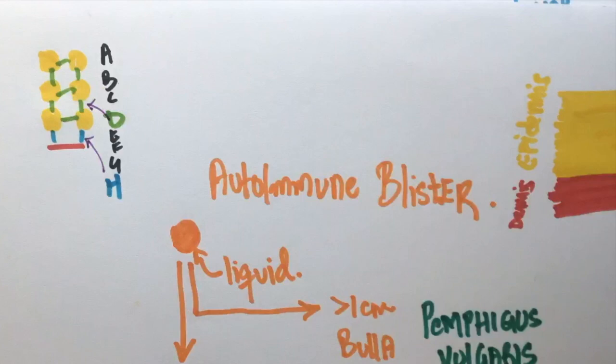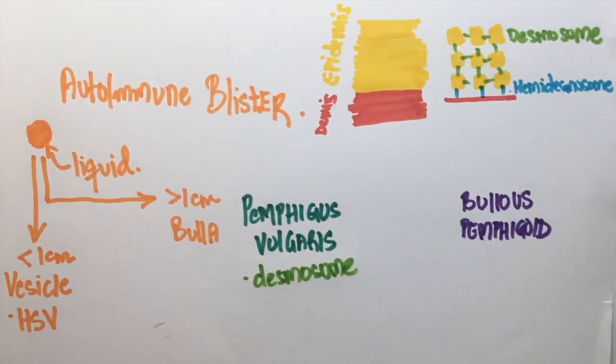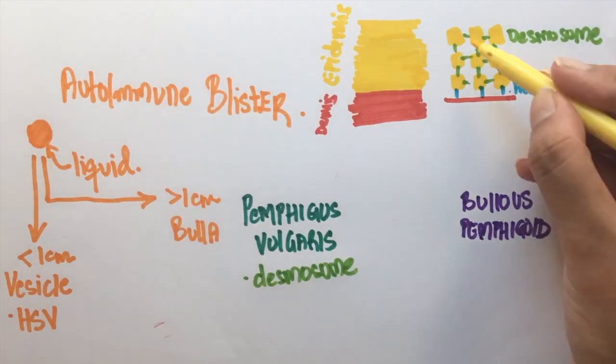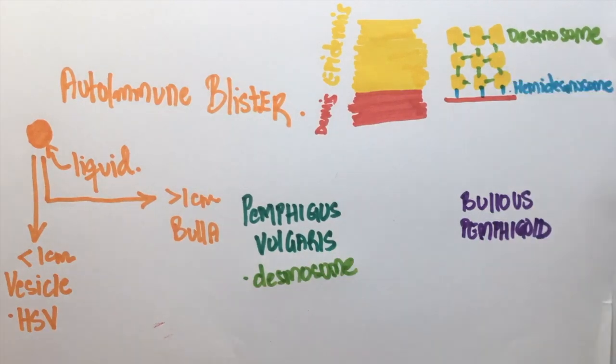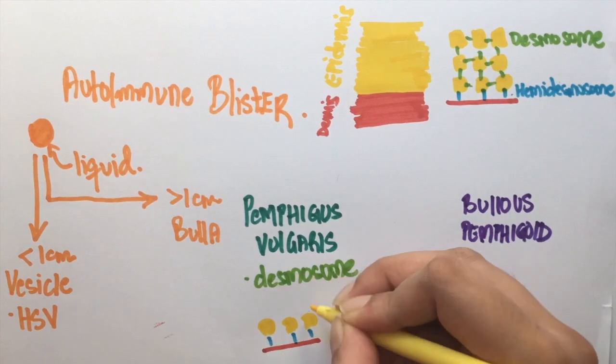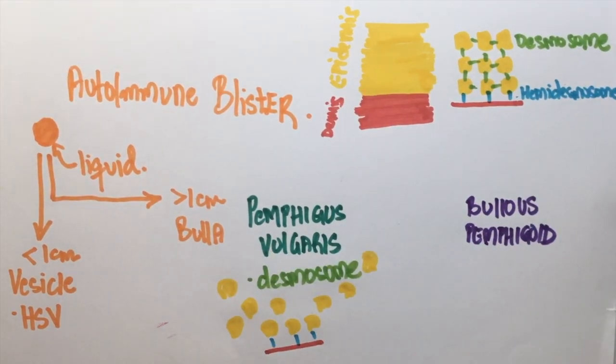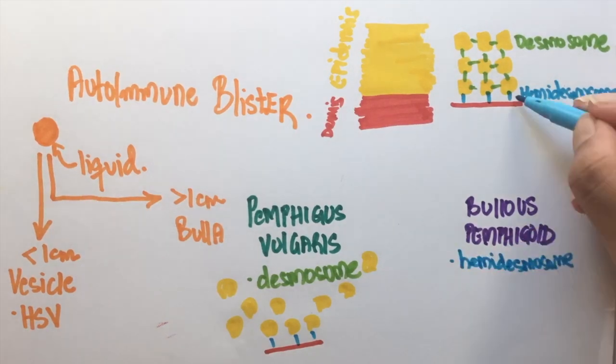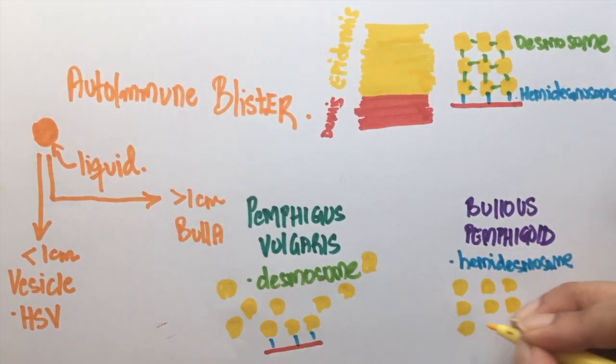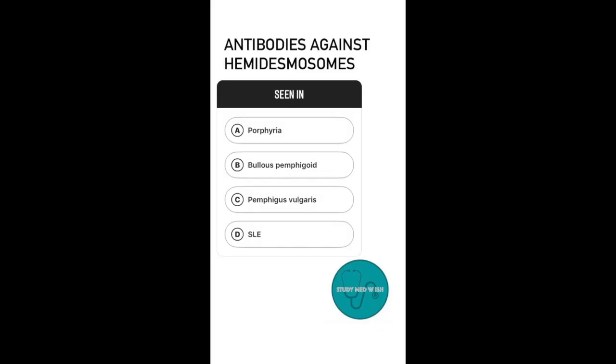In pemphigus vulgaris, there are antibodies present against the desmosomes, so the connection between two epidermal cells will be lost — epidermal cells get separated. In bullous pemphigoid, there are antibodies against the hemidesmosomes, so there will be a separation at that lower level.